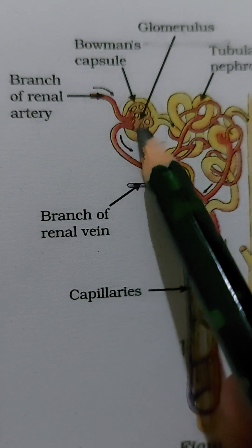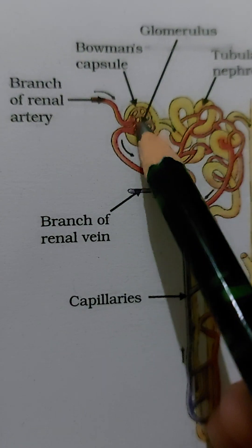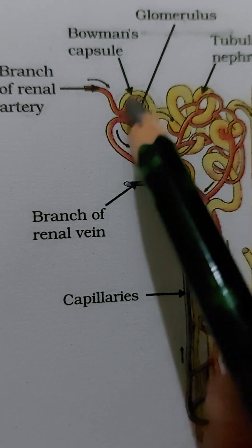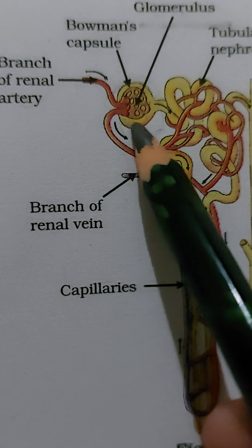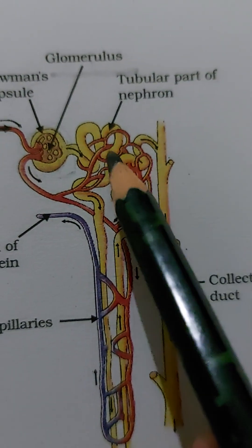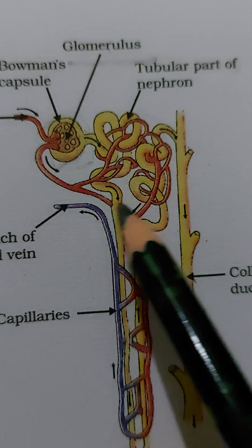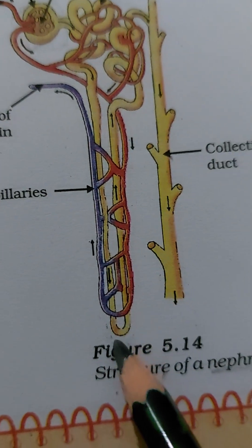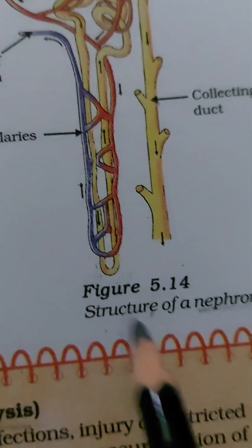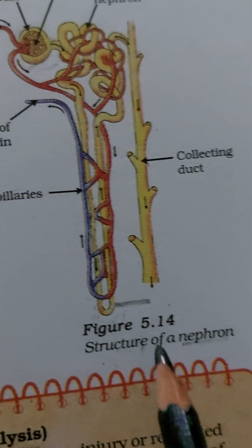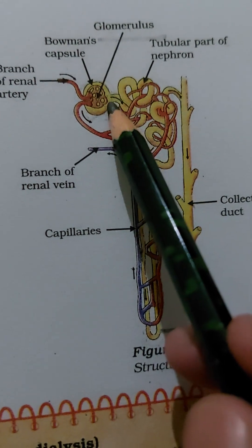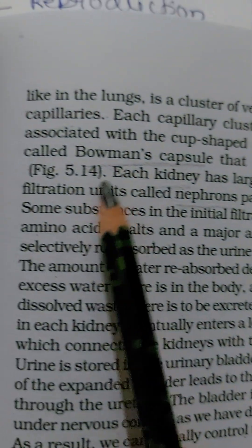In the glomerulus, metabolic waste filtration occurs into the capillaries. This filtrate then passes into the tubular part of the nephron, which is a coiled tube-like structure. Below this is the loop of Henle.